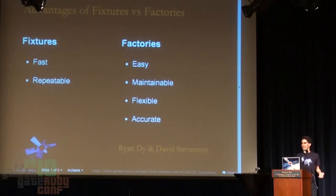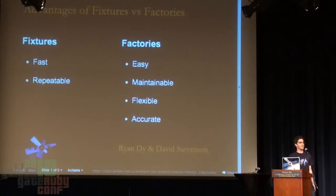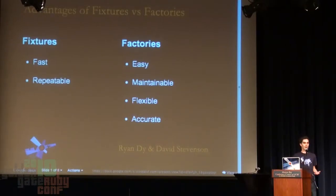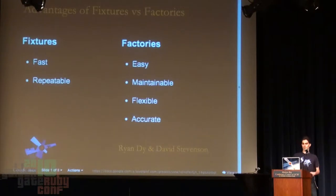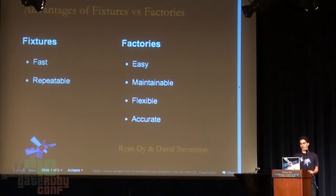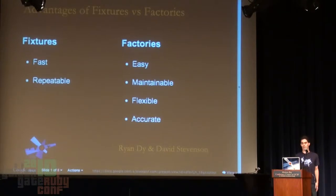Then came factories — we have Factory Girl, we have Fixture, and others. I thought factories were really amazing until I had about a thousand tests using factories. Then my test suite is like an hour long and I have to figure out how to parallelize it. I learned that you can make it go faster — all you have to do is maybe not save your records as much as possible and keep the number of objects down to a bare minimum.